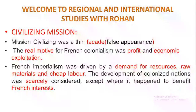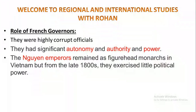French imperialism was driven by a demand for resources, raw materials, and cheap labour. The development of colonized nations was scarcely considered except where it served French interests. French Governors were highly corrupt officials who had significant autonomy, authority, and power, and they served primarily for the interests of the French.